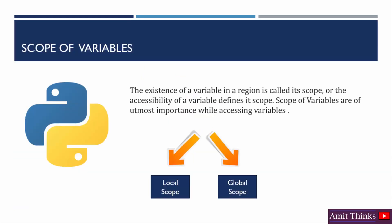Scope, as the name suggests, is the existence of a variable in a region. You can say you have defined the variable in the beginning of your program or inside a function. How those variables can be accessed basically defines its scope. While accessing variables and their values, this scope is really important. There are two scopes basically in Python: local scope and global scope.